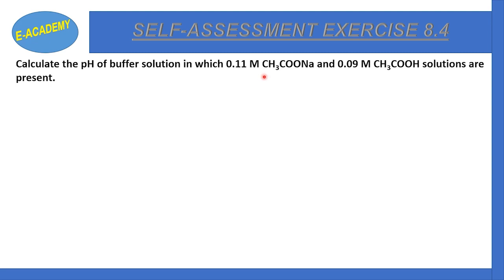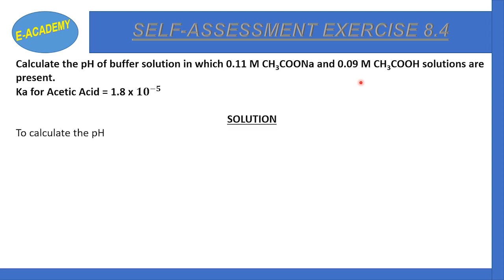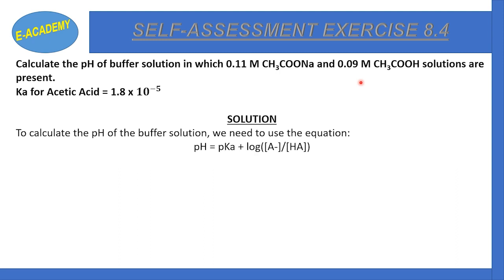Now, self-assessment exercise 8.4: Calculate the pH of the buffer solution in which 0.11 molar CH₃COONa and 0.09 molar CH₃COOH solution are present. Ka for acetic acid is 1.8 × 10⁻⁵. To calculate the pH of the buffer solution we use the Henderson-Hasselbalch equation: pH = pKa + log([A⁻] / [HA]).